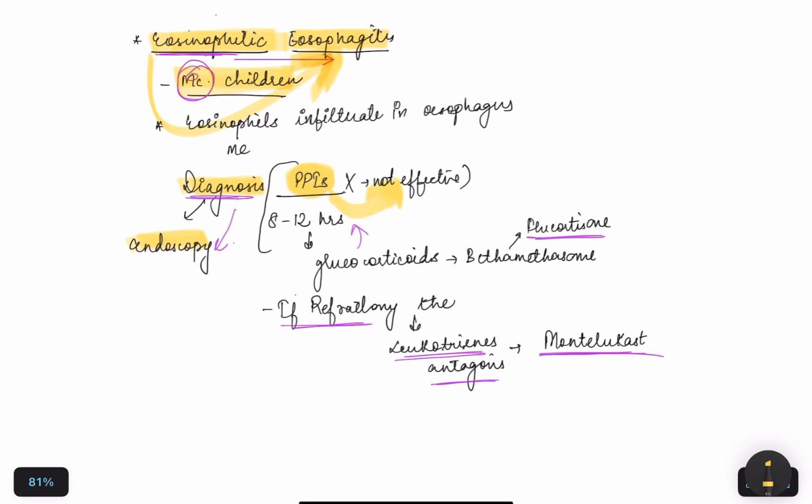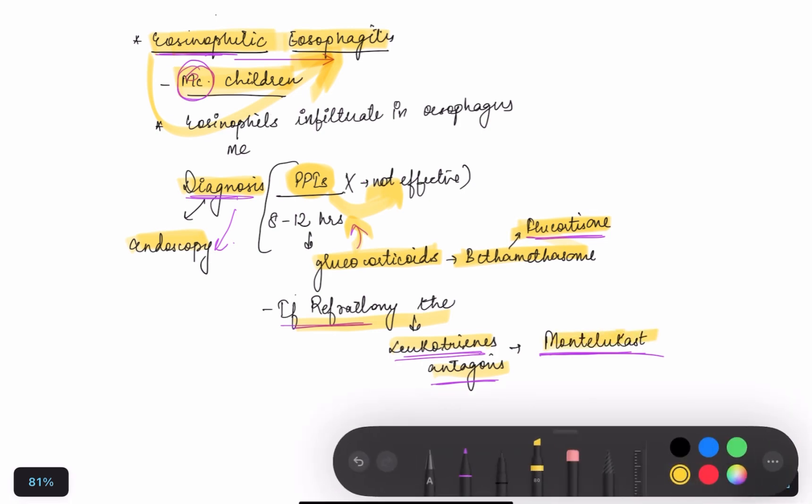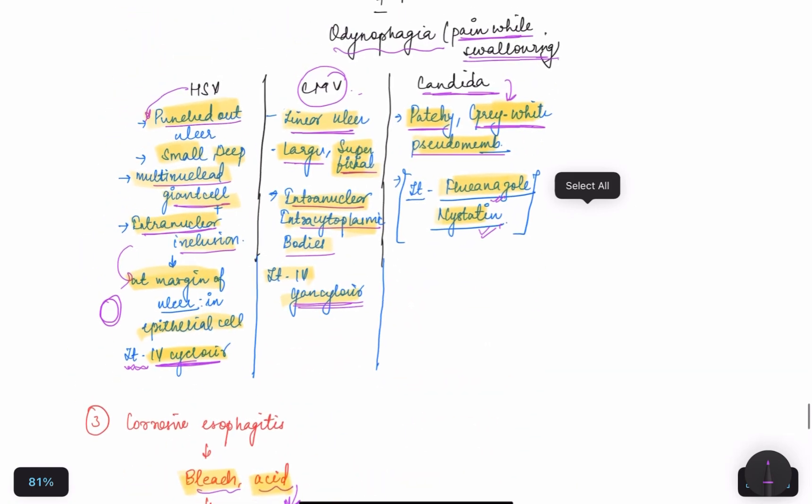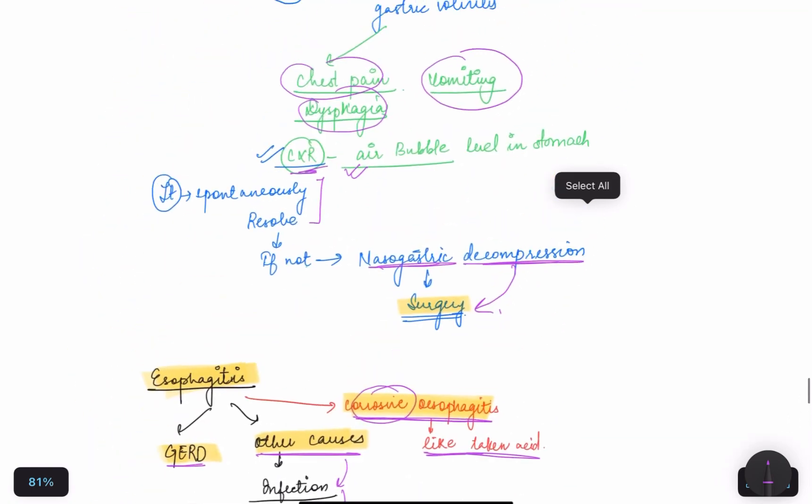These are not effective, so we will provide glucocorticoids like betamethasone. And if refractory, we will provide leukotriene antagonists like montelukast. So this is all we studied about GERD complications and causes of esophagitis.